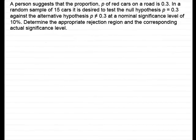Welcome to this example on hypothesis testing for the proportion p from a binomial distribution. In this particular example, I want to look at two-tailed tests and finding a region where we reject the null hypothesis. We've got a person who suggests that the proportion p of red cars on a road is 0.3, and in a random sample of 15 cars, it is desired to test H0: p=0.3 against H1: p≠0.3, at a nominal significance level of 10%. We have to determine the appropriate rejection region and the corresponding actual significance level.